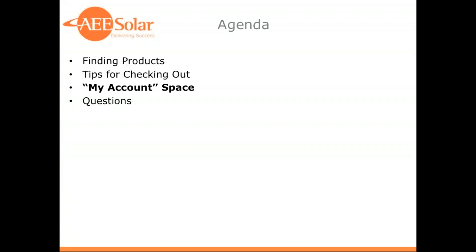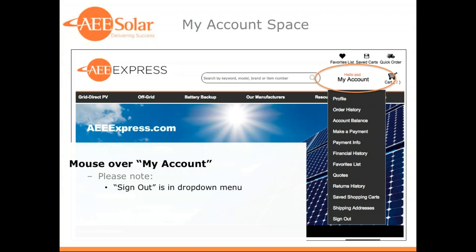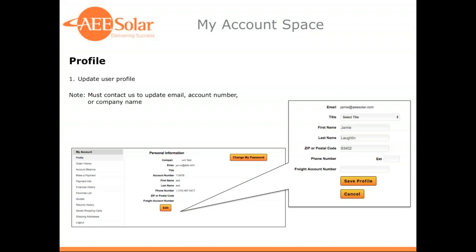That's finding your products and checking out. Now we'll walk through your My Account space, where you're able to handle many of your order-related needs. To access your account space, just roll over the 'My Account' text on the right-hand side of the header underneath your name in orange. The first page we get to is your profile page.